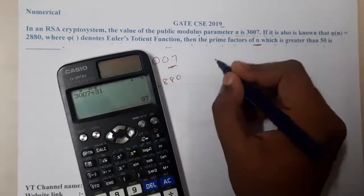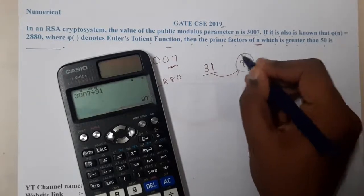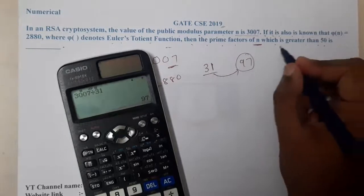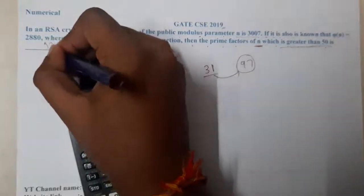Okay yes! So luckily we got it with respect to 31. So if our value is 31, the other value will be 97. So they asked what is the prime number which is greater than 50? So basically 97.